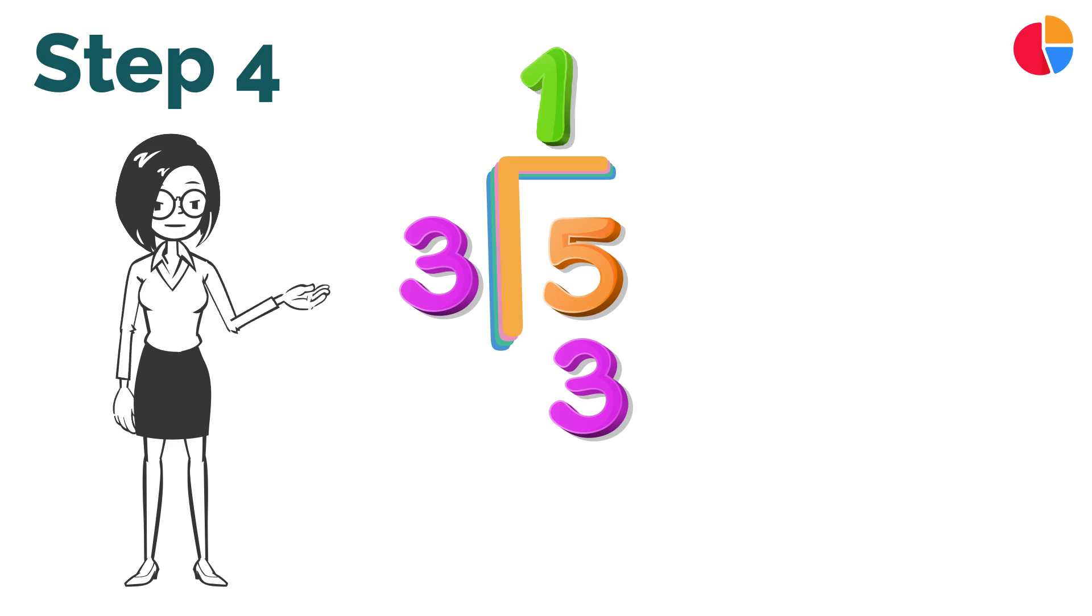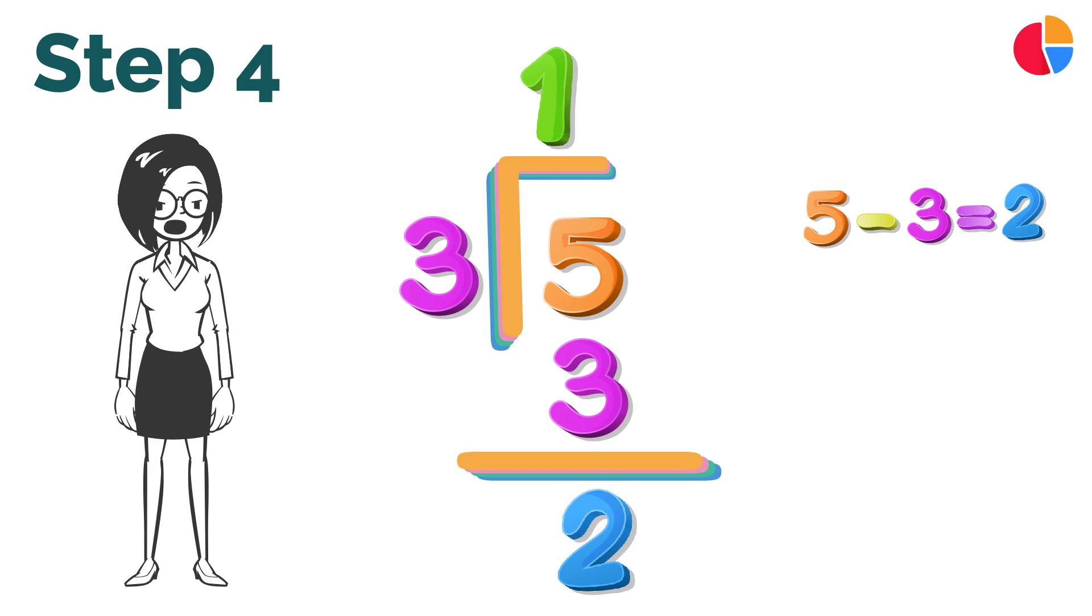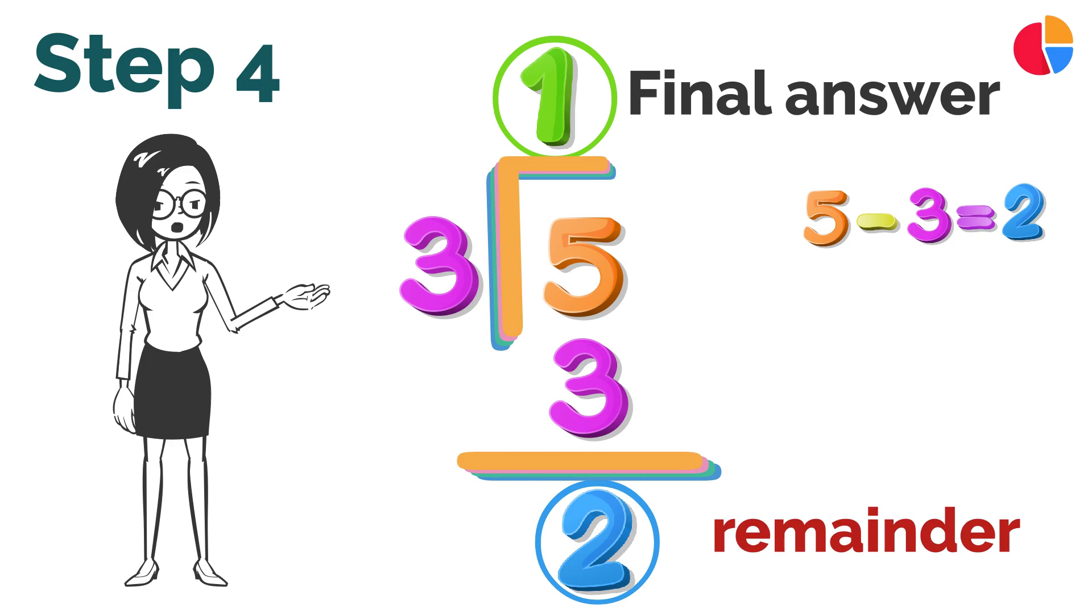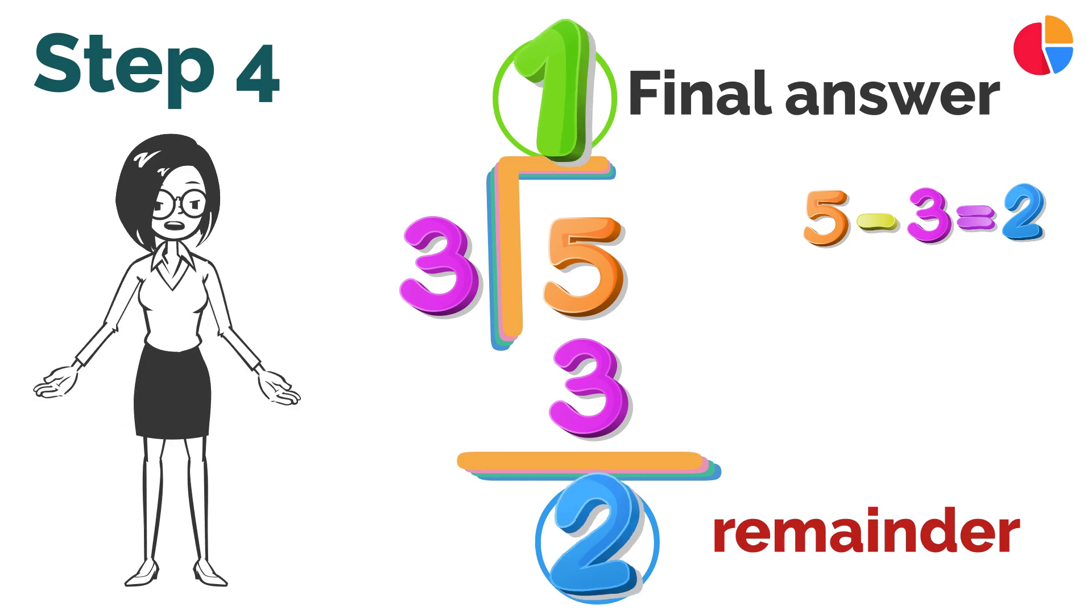The final answer is the top number and any remainder will be the bottom number. So for five divided by three, the final solution is one with a remainder of two.